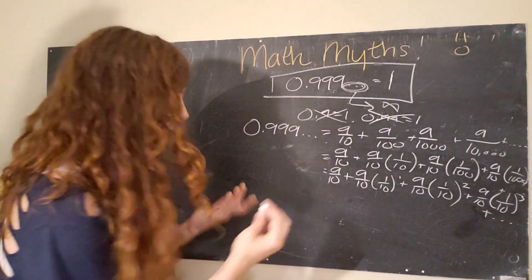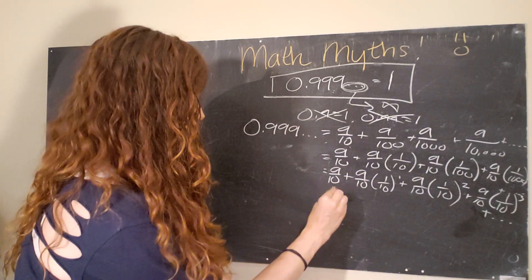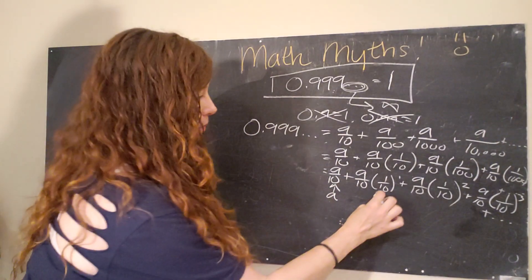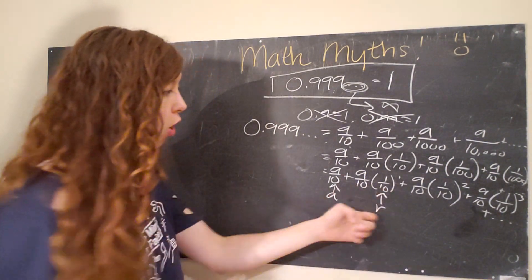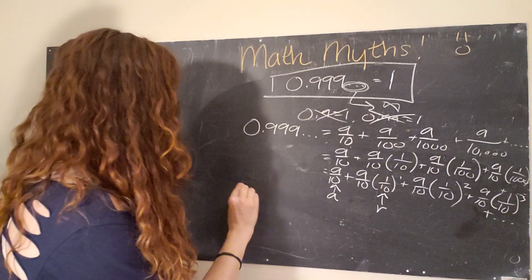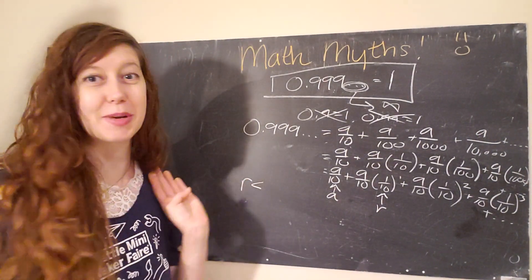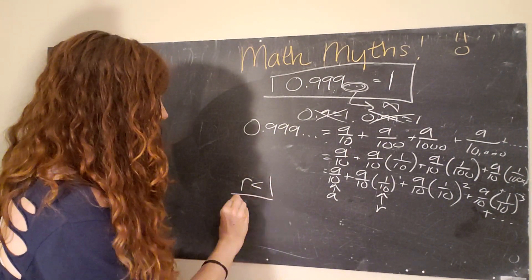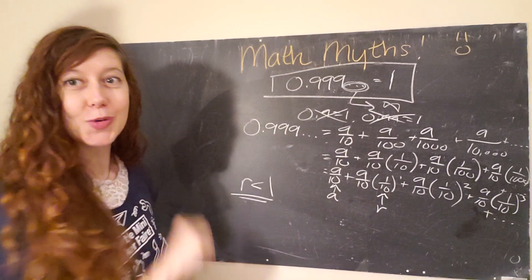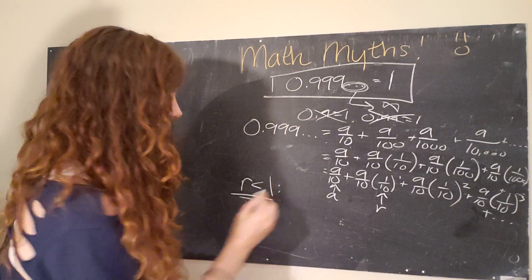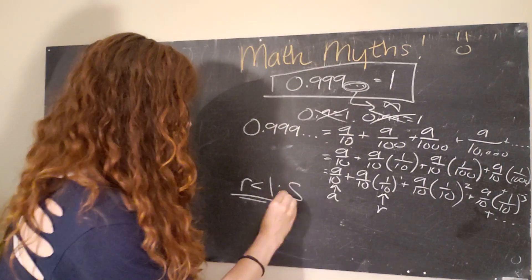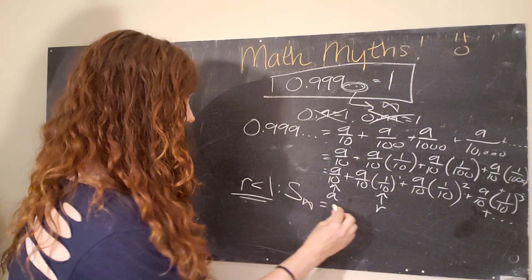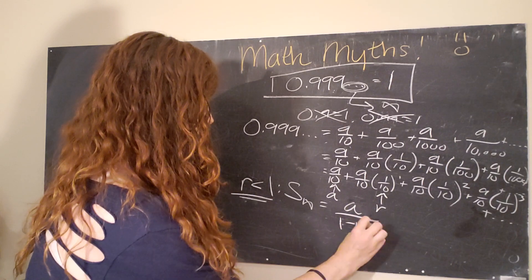Cool. Boom. So this is our geometric series. So in this case, 9 over 10 is A, or our first term, and 1 over 10 is R, which is our ratio. And there's a really cool thing that has been figured out by lots of mathematicians before us, that if your ratio is less than 1, then you can use the infinite series sum, which is a bit easier and quicker. So this sum for our infinite series is just A over 1 minus R.